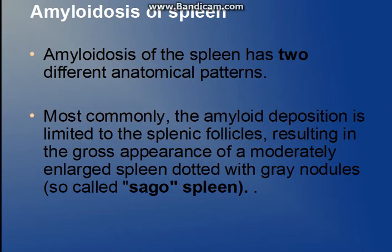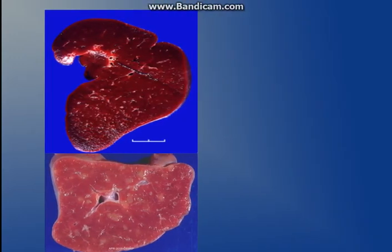Now going to amyloidosis of the spleen. Amyloidosis of the spleen has two patterns, which is very important for undergraduate examinations. The first is known as sago spleen, and the second is known as lardaceous spleen. In sago spleen, amyloid is deposited and limited to the splenic follicles, so the gross appearance is dotted with gray nodules on the cut section, which resembles sago grain.